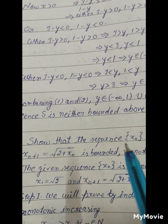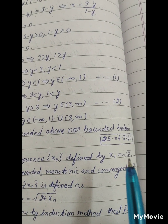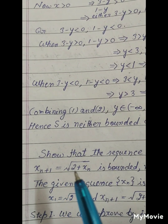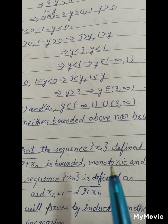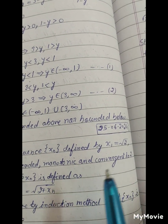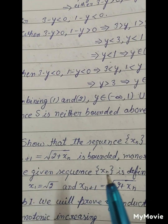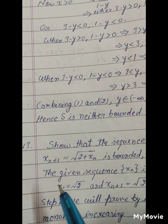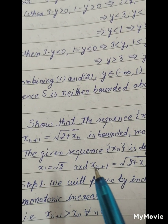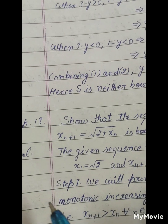The sequence xn is defined by x1 equals square root of 2 and xn+1 equals square root of 2 plus xn. We are to show that this sequence is bounded, monotonically increasing, and convergent to 2.